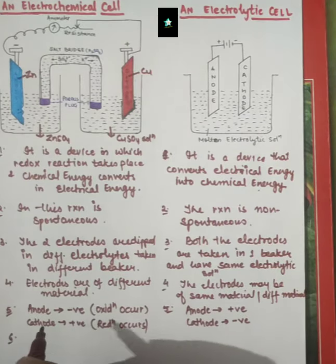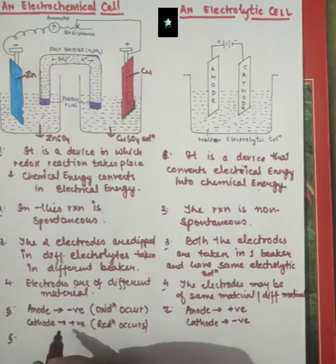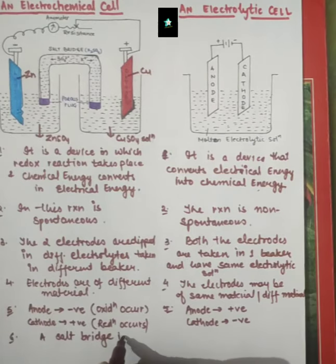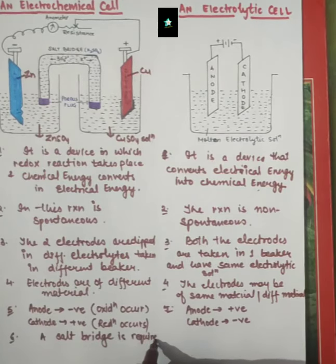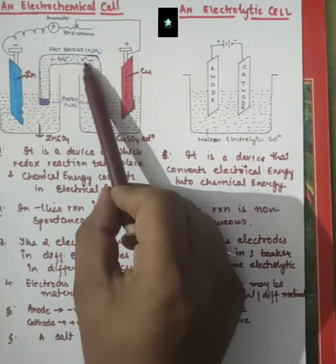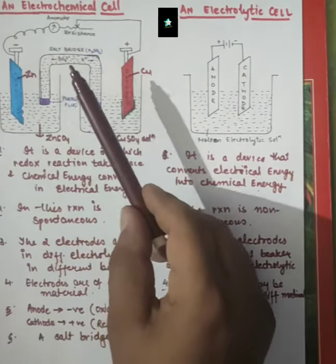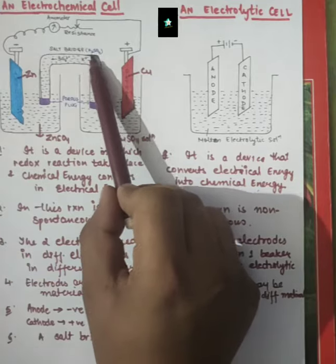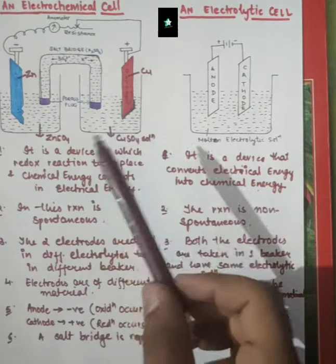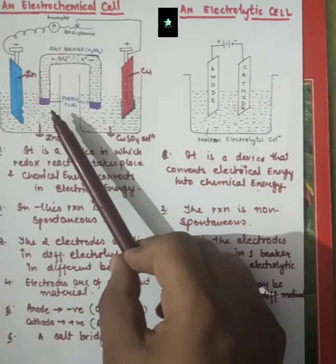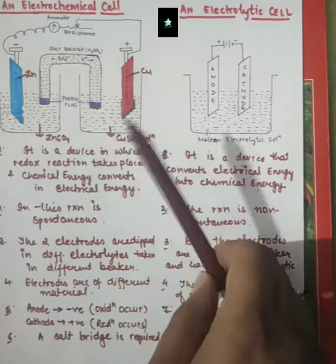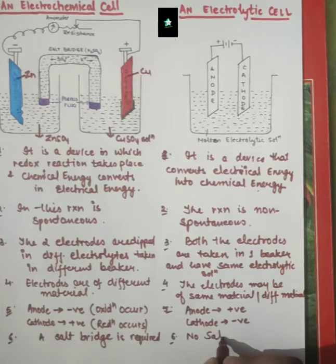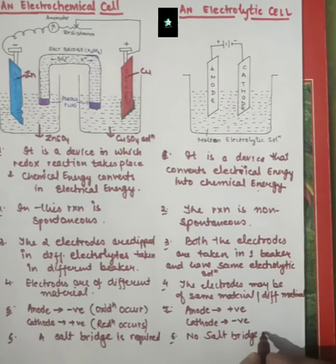The sixth point: in the electrochemical cell, a salt bridge is required. A salt bridge is a porous U-shaped tube containing an inert electrolyte — for example, K₂SO₄. The salt bridge is mainly used to maintain electrical neutrality so that the chemical reaction takes place continuously. In the electrolytic cell, no salt bridge is required.